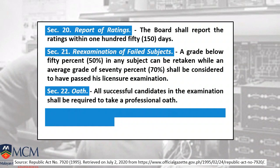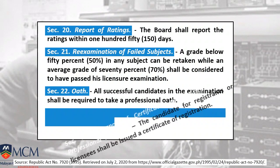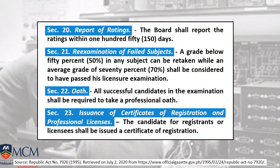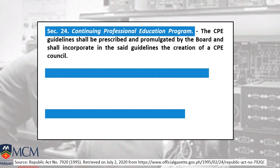Oath-taking: all successful candidates in the examination shall be required to take a professional oath. Section 23 is the issuance of certificates — before the PRC releases your PRC ID, the PRC and IIEE will give you a Certificate of Registration for Pre-Employment Services. Section 24 covers the Continuing Professional Development program, commonly known as CPD — mandated by ex-Senator Trillianes — where every electrical engineer must complete 15 CPD units by joining seminars and related activities which carry CPD points.